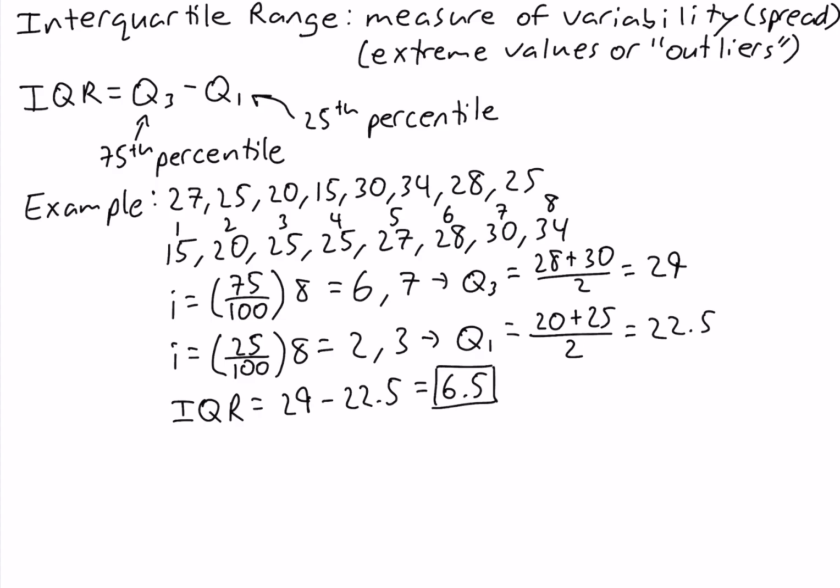Now let's demonstrate why the interquartile range does a good job of measuring variability when there are extreme values in the data. Let's change one of the values from 34 to 340.